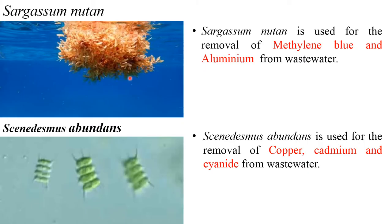Sargassum natans is used for the removal of methylene blue and aluminium from wastewater. Scenedesmus abundans is used to remove copper, cadmium, and even cyanide from the wastewater.